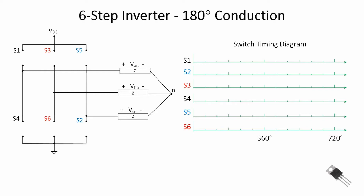In 180-degree conduction we turn switch S1 on — shown as a high logic level. Each tick on the axis represents 60 degrees of our cycle, and the time axis is normalized in conduction angle so 360 degrees equals one cycle. S1 is on or closed for 180 degrees of conduction, then its pair S4 turns on for 180 degrees after S1 turns off, and they alternate back and forth.